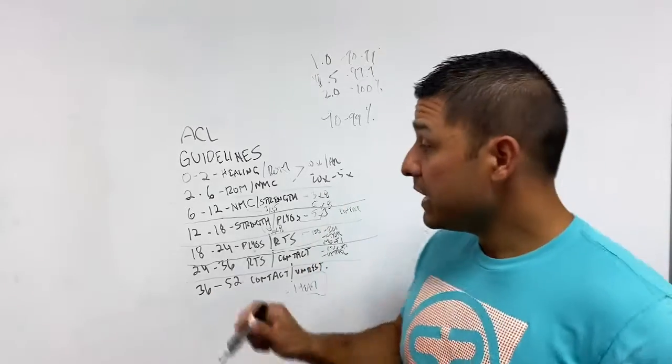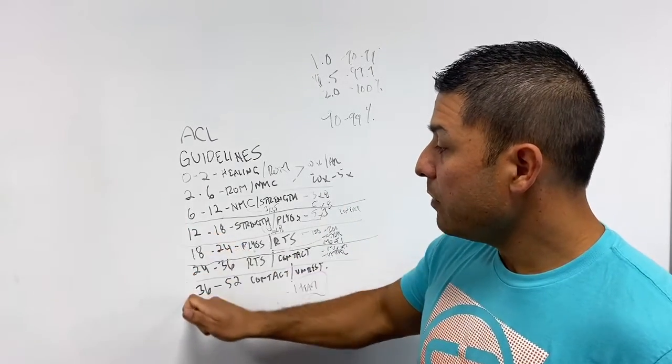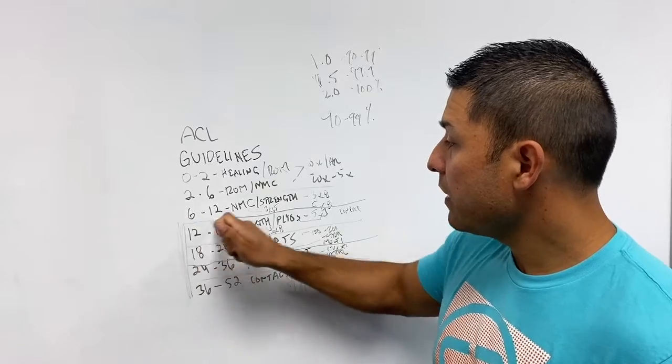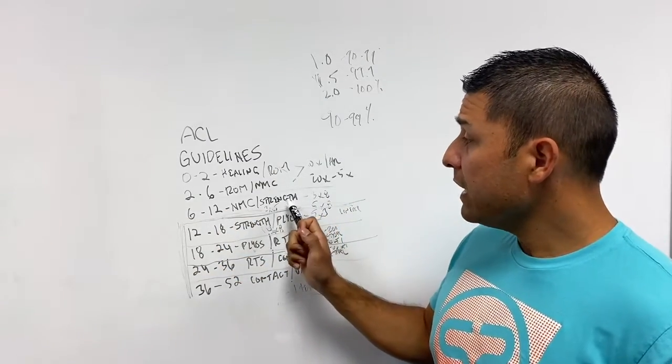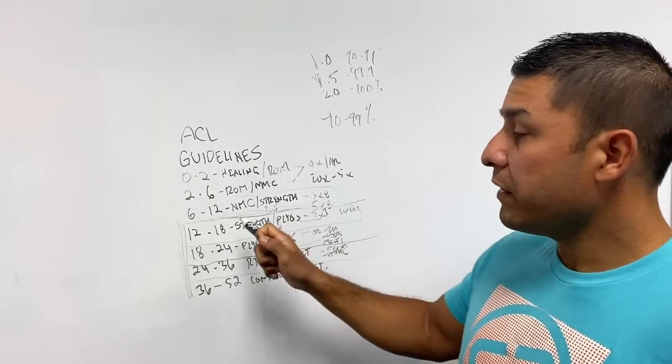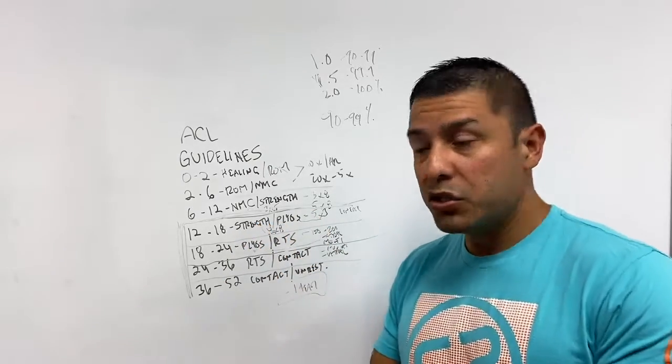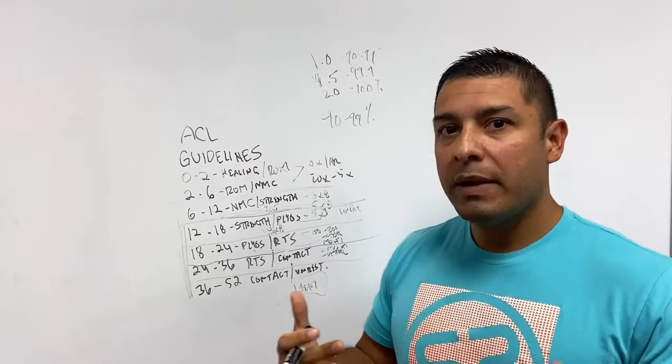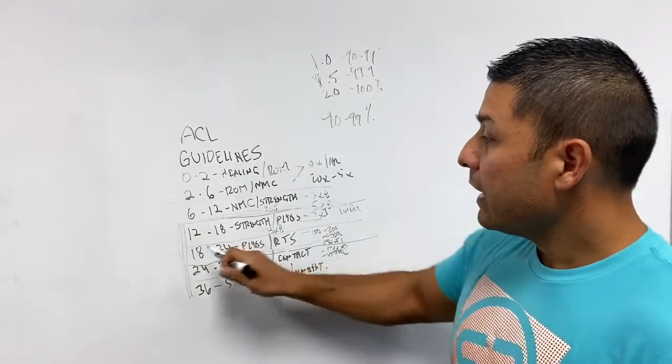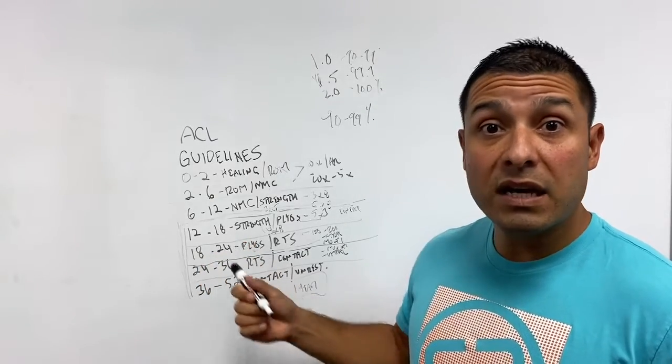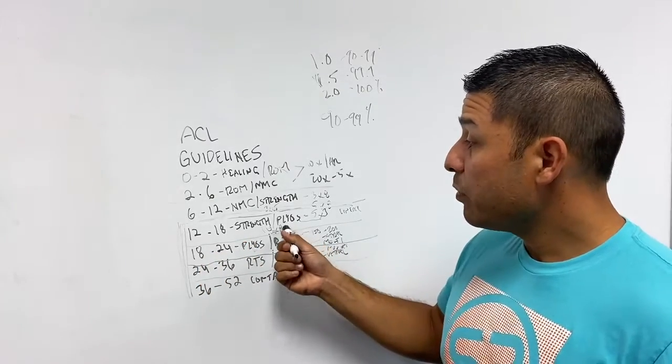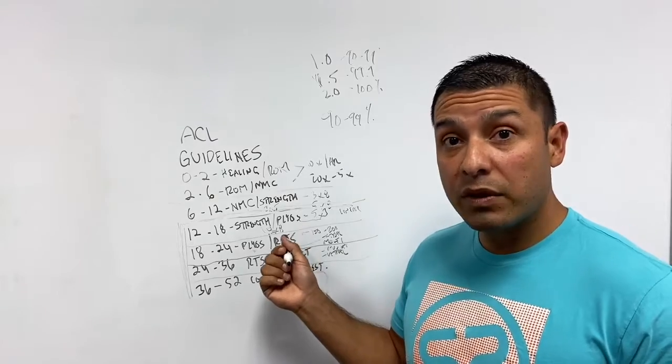Where the trouble becomes is at three months, at the three month mark, this block right here, where typically we would either lose them to maybe an insurance claim or they can't come as frequent. A lot of times this is the most important. And this is where you're going to have most of the strength gains and the confidence.